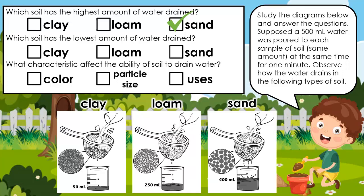Which soil has the lowest amount of water drained? Clay, loam, or sand? Clay. You got it right. What characteristics affect the ability of soil to drain water? Color, particle size, or uses? Particle size! You're amazing!